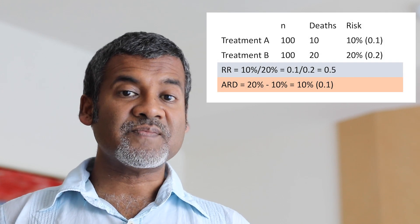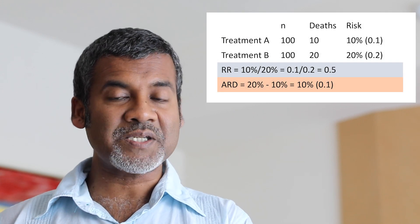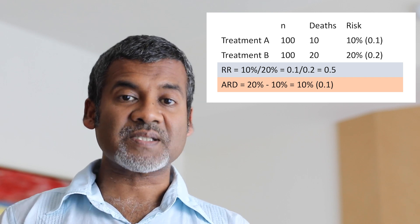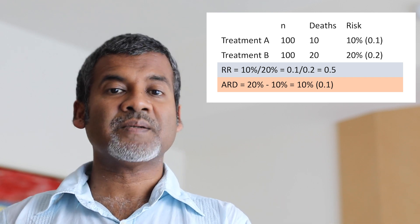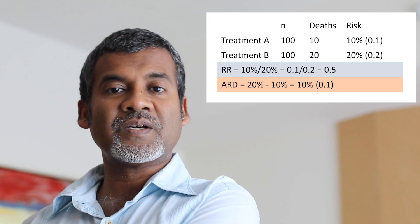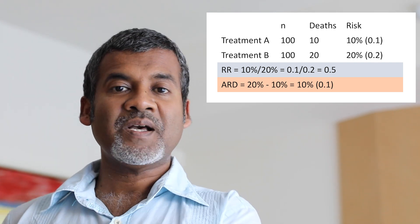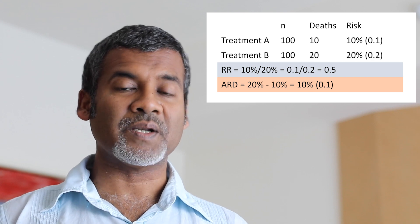Now let's move on to absolute risk difference — ARD. The absolute risk difference is the risk in one group minus the risk in the other group. The risk of death in the standard treatment group is 20% and in the newer treatment group is 10%, so the absolute risk difference is 20% minus 10%, which is 10%, or 0.2 minus 0.1 equals 0.1.